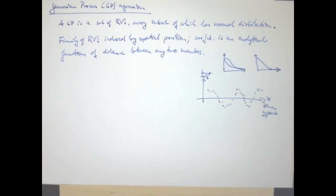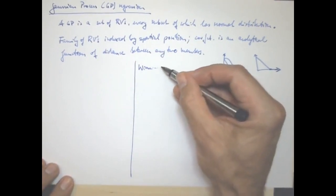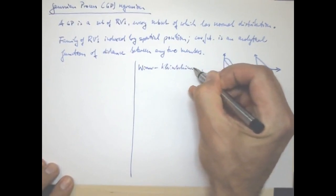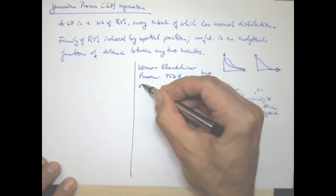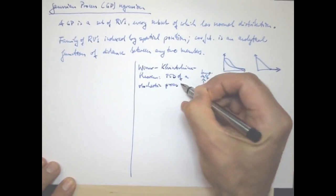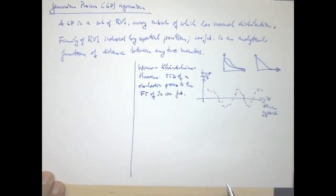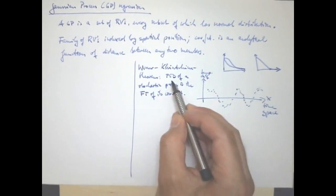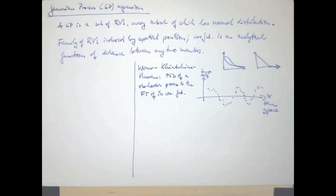Or we can recur to the Wiener-Kinchen theorem. The Wiener-Kinchen theorem, which says that the power spectral density of a stochastic process is the Fourier transform of its covariance function. Now the power spectral density tells you how much energy does the signal have at a given frequency and power spectral densities cannot be negative. So the power spectral density must be non-negative. And the Fourier transform of a non-negative measure is something that's positive semi-definite.